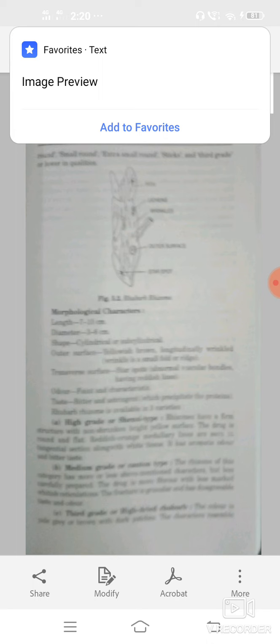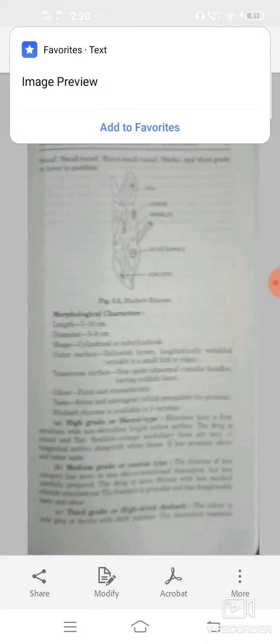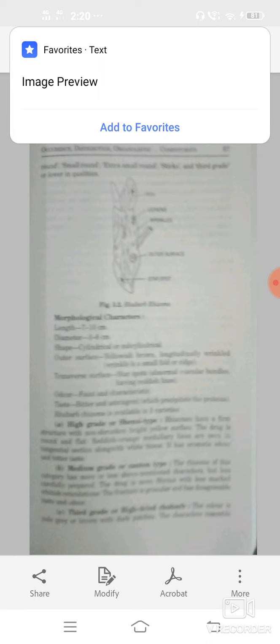Medium grade: that is most fibrous, fracture is granular, disagreeable taste or odor. Third grade: color is pale gray or brown with dark patches. Character resembles with shen cantons.